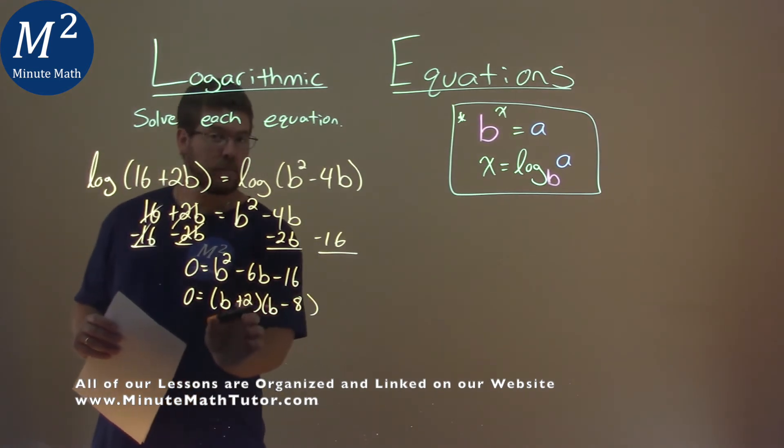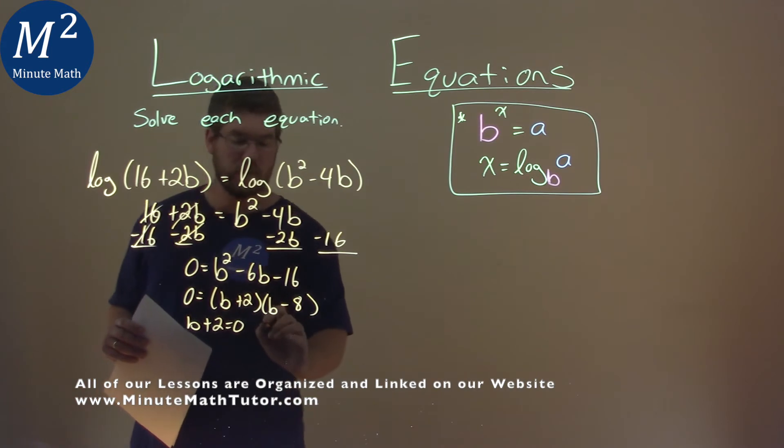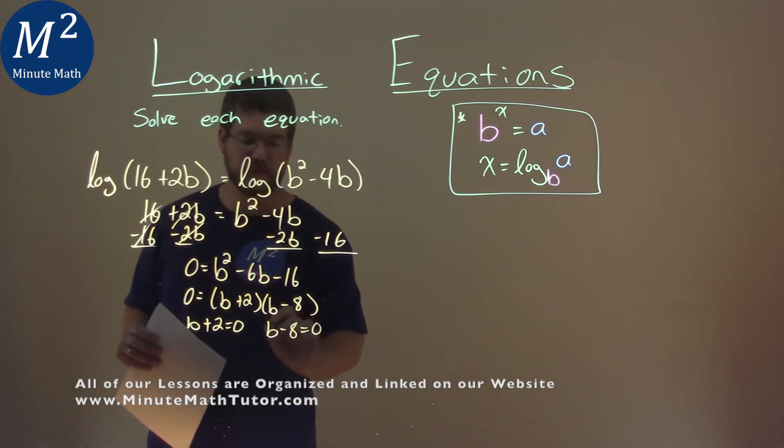we can set now each part individually equal to 0 to solve for b. So b plus 2 equals 0, and b minus 8 equals 0.